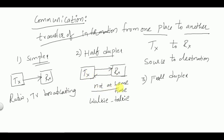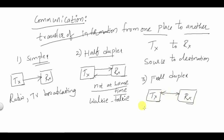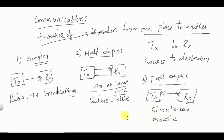In full duplex communication, there is signal transmission from transmitter to receiver and also from receiver to transmitter simultaneously. An example of full duplex communication is mobile communication, where we can have simultaneous transmission of messages from transmitter to receiver or from receiver to transmitter.